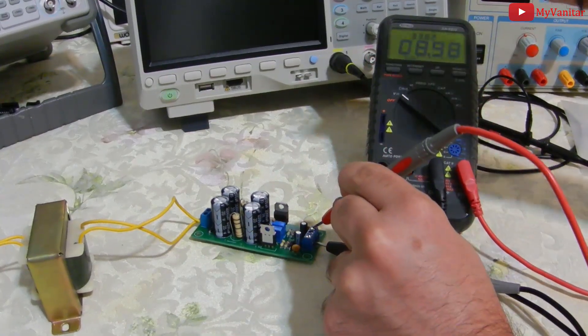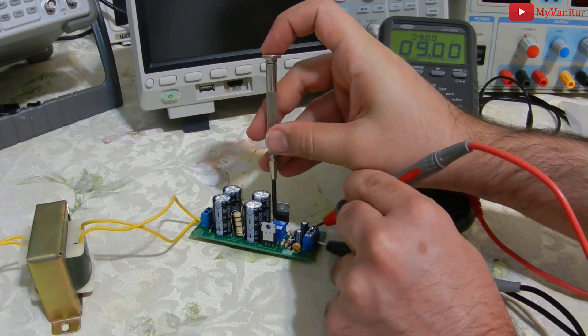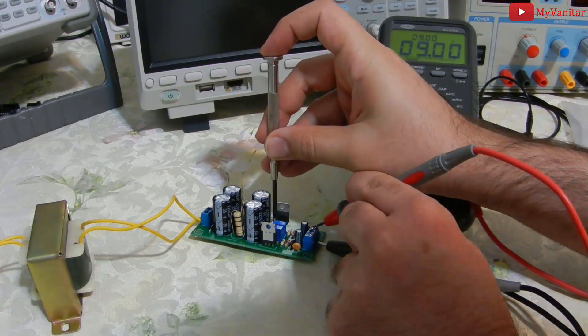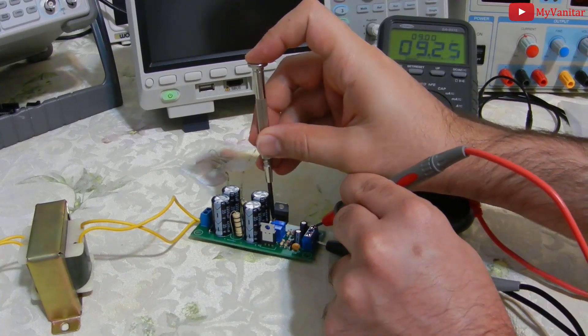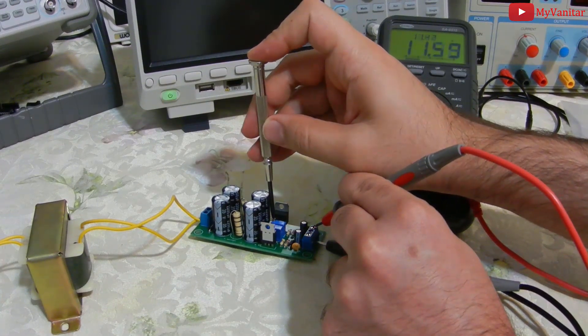So if I turn this potentiometer, the positive rail voltage would increase. Just check the voltmeter screen - it goes to 12 volts. That's good.